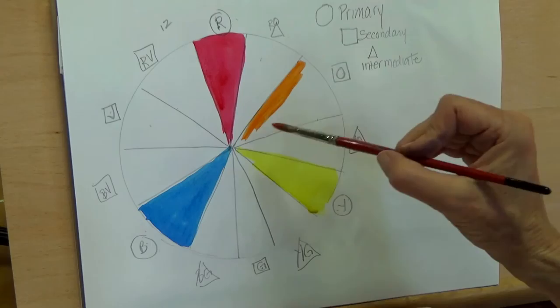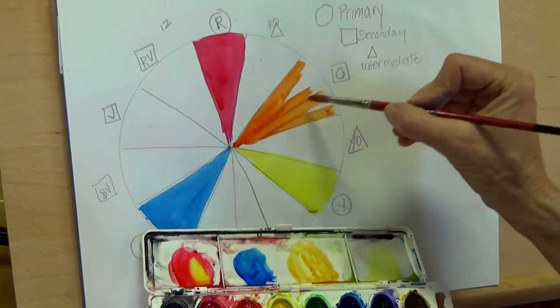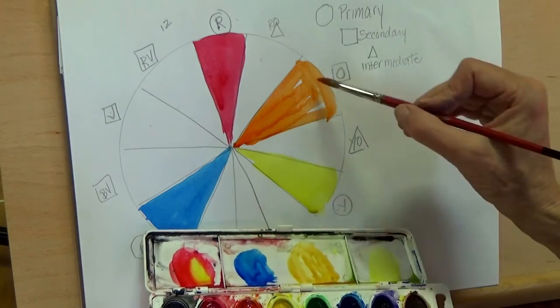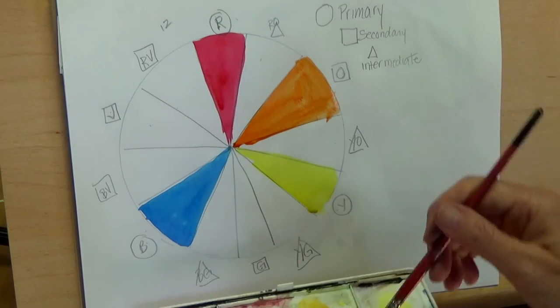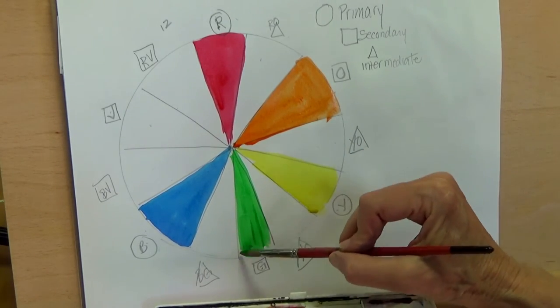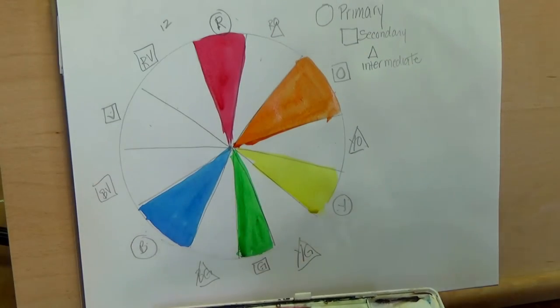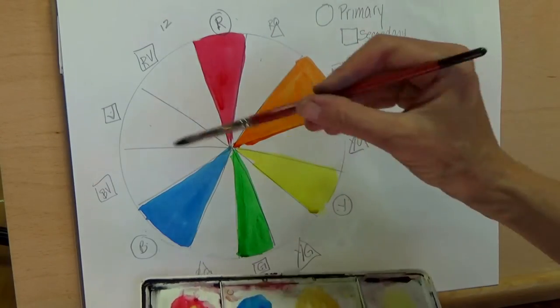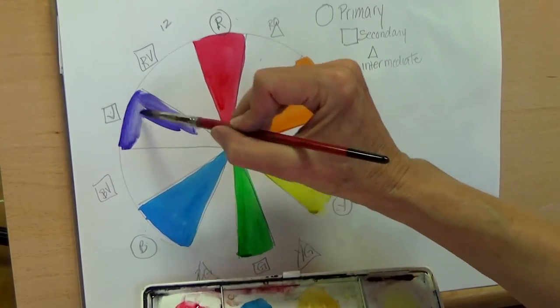Fill that orange. Notice you're skipping a space and that gives it a chance to dry, so you're leaving that blank one or the intermediate colors blank for a while. It gives the other ones a chance to dry. Do the green, do your purple or violet. Violet sounds fancier doesn't it, so we'll say violet. Try not to outline it and fill it in.